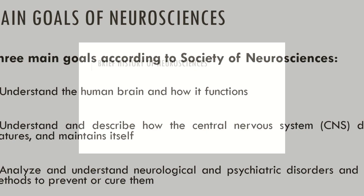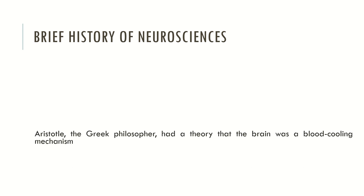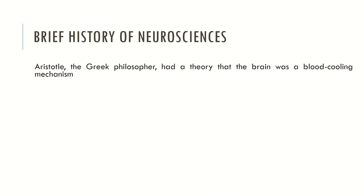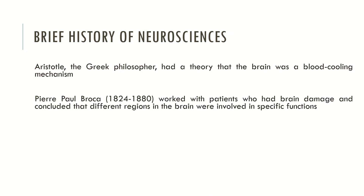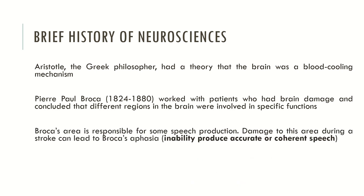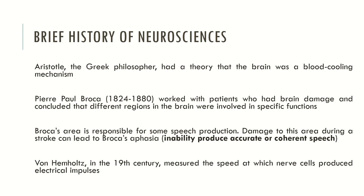Now let's look at a brief history of Neurosciences. As covered in the previous videos, Aristotle, the Greek philosopher, had a theory that the brain was a blood cooling mechanism. Moving to a more contemporary approach, Paul Broca worked with patients who had brain damage and concluded that different regions in the brain were involved in specific functions. Broca's area is responsible for speech production, and damage to this area during a stroke can lead to Broca's aphasia — the inability to produce accurate or coherent speech. Helmholtz in the 19th century measured the speed at which nerve cells produced electric impulses.